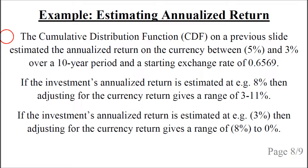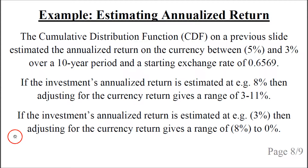The cumulative distribution function from the previous slide estimated the annualized currency return to be between minus 5% and plus 3% over a 10-year period, starting from an exchange rate of 0.6569. So if the investment's annualized return is estimated at 8%, adjusting for the currency return gives a range of 3% to 11%. If instead the investment's annualized return is estimated at minus 3%, adjusting for the currency return gives a range of minus 8% to 0%. We simply add the range of the currency return to the investment's return estimate.